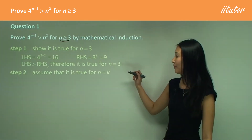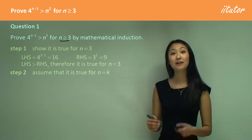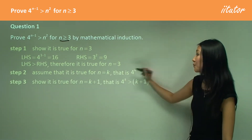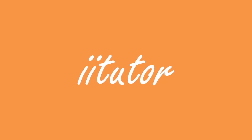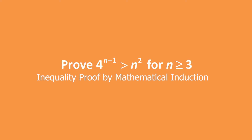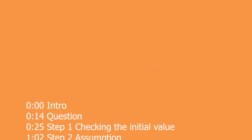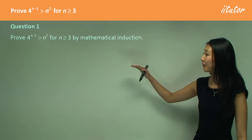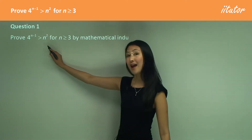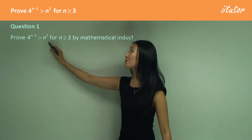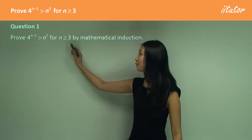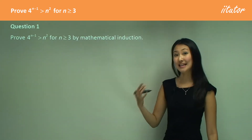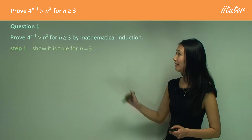In step one, in step two, we want to make the assumption that's true for n equals to k. So this is what we want to prove. We want to prove that 4 to the power of n minus 1 is greater than n squared, and it's 4n is greater or equal to 3 by mathematical induction.